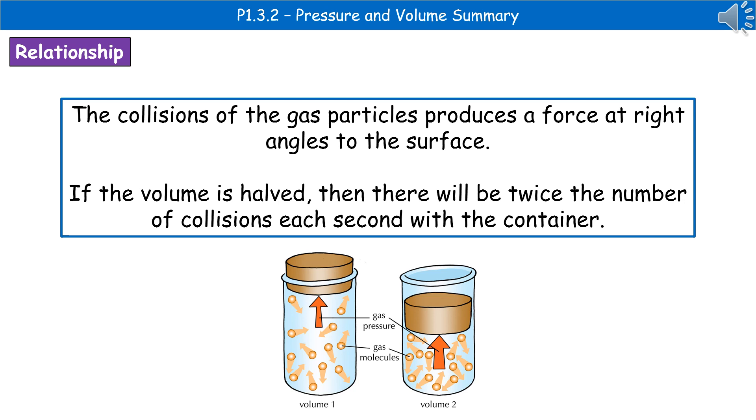And to give you an idea, I've given you a diagram at the bottom showing why that is. In our first volume, one on the left, we've got a much bigger space for those particles to move around in. Therefore, they're less likely to collide with the surface, which means we will obviously have a lower pressure. Whereas when we reduce the volume, then those same number of particles are moving around in a smaller space, which means they're more likely to collide with the sides.